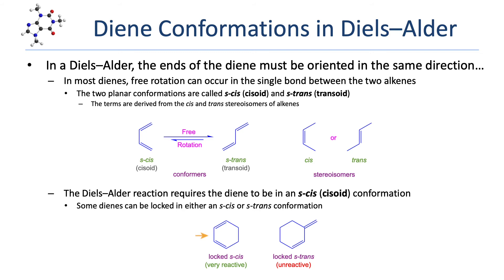We see the S-cis (cisoid) conformation and the S-trans (transoid) conformation; these terms are derived from cis and trans used to describe alkene stereoisomers. Some conjugated dienes can be locked in an S-cis or S-trans conformation. A diene locked in the S-cis conformation will always have its two ends together, enabling a very fast Diels-Alder reaction. In contrast, a diene locked in the S-trans conformation can never adopt the S-cis conformation; the limited free rotation of the ring keeps the two ends of the diene apart, preventing any Diels-Alder reaction.